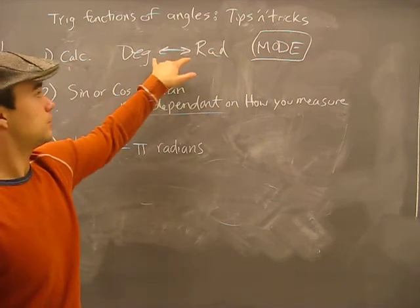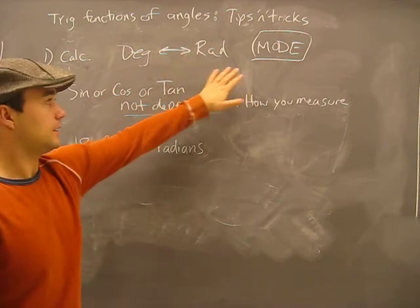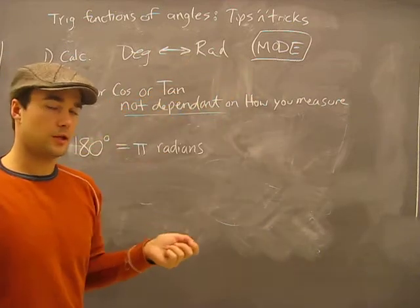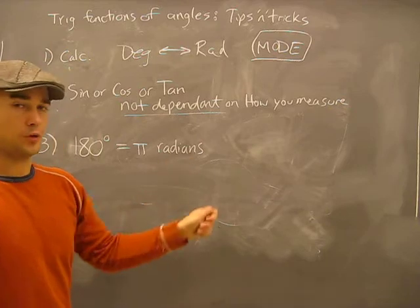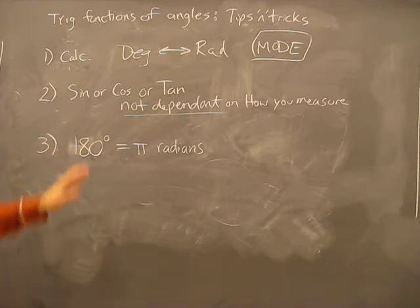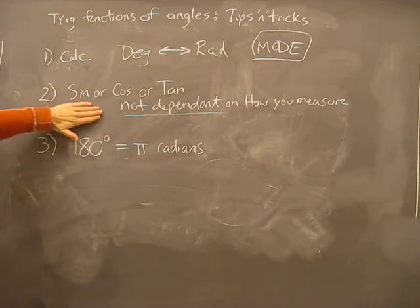on your calculator, you've got to make sure that you're in the right mode. To switch between degrees and radians, there's a button on your TI-83 or 83 plus that says mode. Make sure you're in the right mode for this, whether you're doing it with radians or degrees. If you're not, it's just going to be trouble, so get used to figuring that out. Number two,